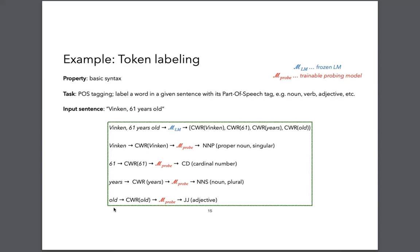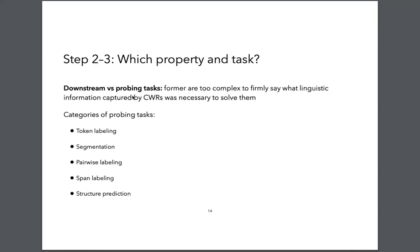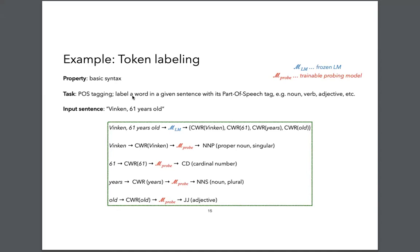There is an important distinction between downstream tasks and probing tasks. Downstream tasks like summarization, question answering, or translation are too complex to firmly say what linguistic information was necessary to solve them. Probing tasks are more connected to linguistic structure prediction — token labeling like part-of-speech tagging, segmentation like named entity recognition, pairwise labeling like relation extraction, and structure prediction like semantic role labeling. You are interested in whether a model has understanding of basic syntactic information, and you use part-of-speech tagging as one way to operationalize testing that property.